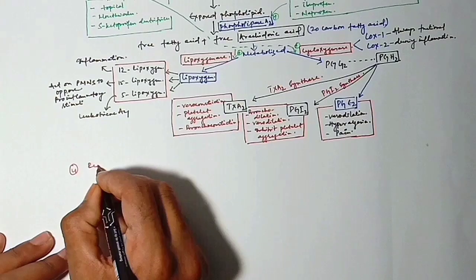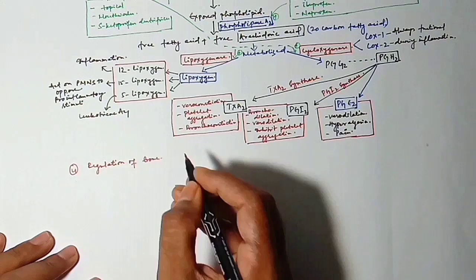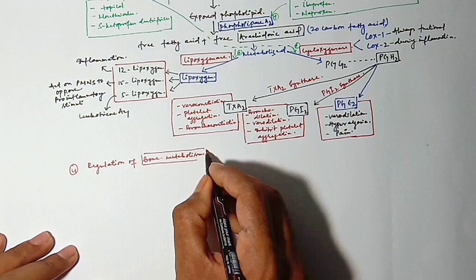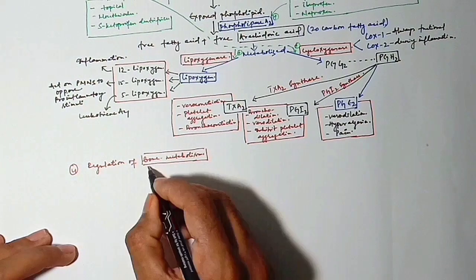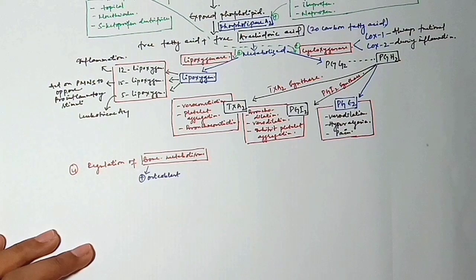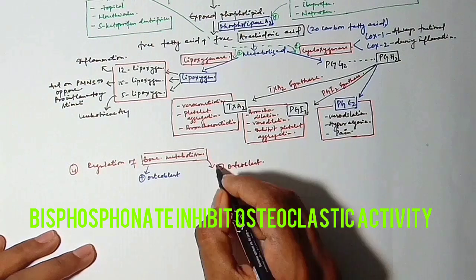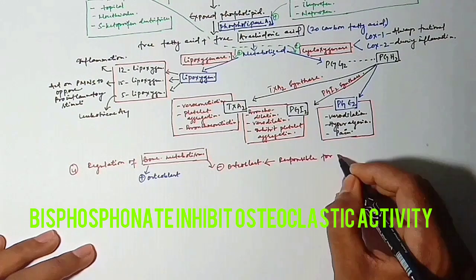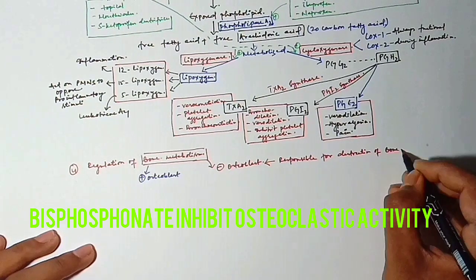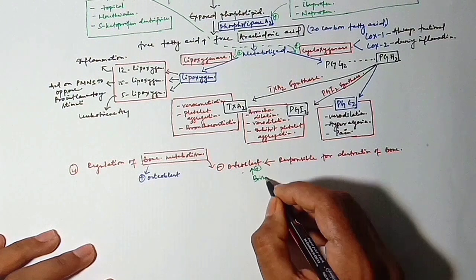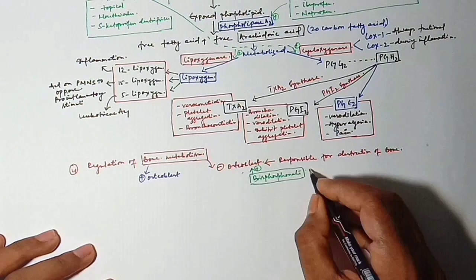Now comes the fourth, that is regulation of bone metabolism. As we all know, osteoblast does bone formation. Osteoclast does bone destruction. So the bisphosphonates, if given in the body, they will just inhibit the osteoclastic activities. So there will be no bone destruction in our body.